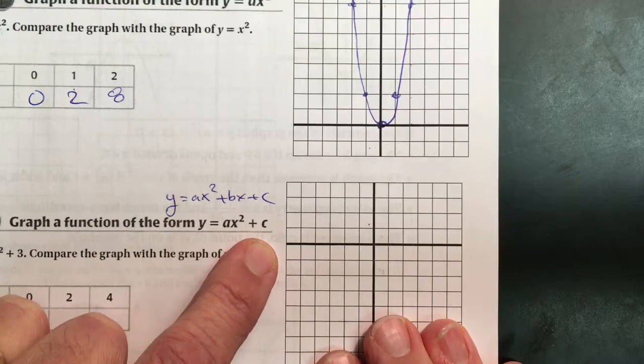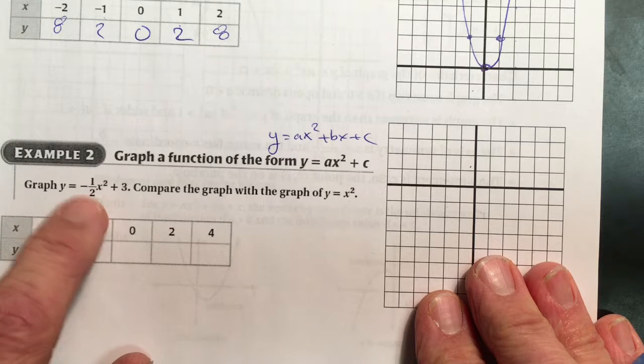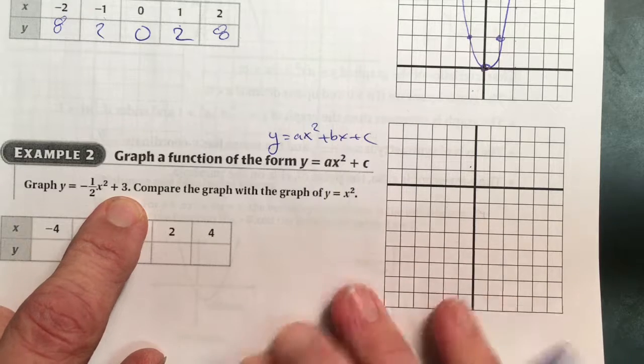It's pretty easy to do. Let's do an example. Again, here's our equation. Here's the ax squared, which is negative one half x squared, plus 3. That's the c. There's no b yet for these.